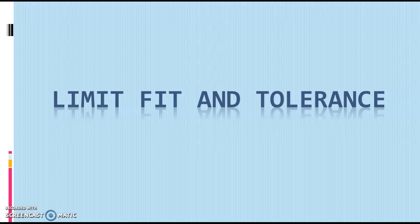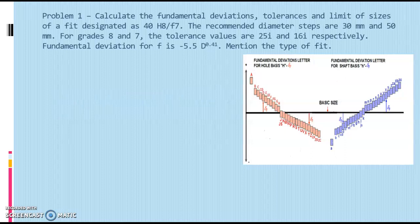In this session we are solving a problem to determine the fundamental deviations and tolerances in a given fit. The problem involves a fit designated as 40 H8/F7. The recommended diameter steps are 30 mm and 50 mm. For grades 8 and 7, the tolerance values are 25i and 16i respectively. The fundamental deviation for F is given as minus 5.5 into d raised to 0.41. We also need to mention the type of fit.